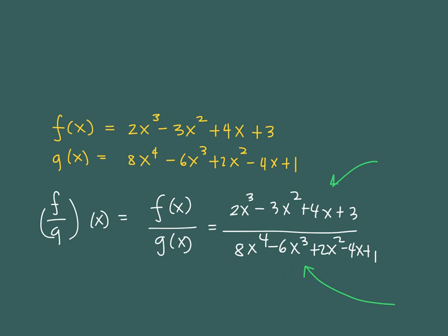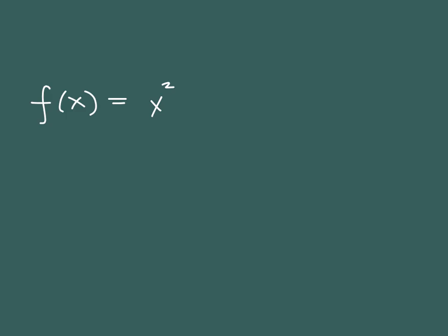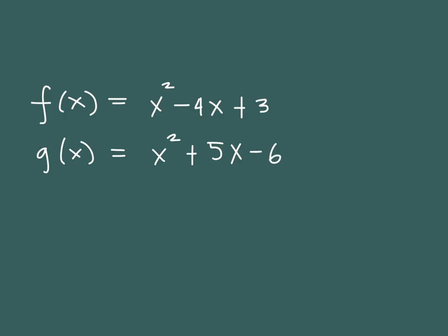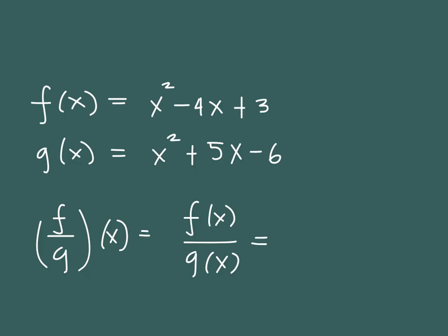Now let's talk about expressions in which we can simplify. Suppose we have a different set of functions: f of x is equal to x squared minus 4x plus 3, and g of x is equal to x squared plus 5x minus 6. If they ask you to find f over g of x, that means f of x over g of x, which equals x squared minus 4x plus 3 over x squared plus 5x minus 6.